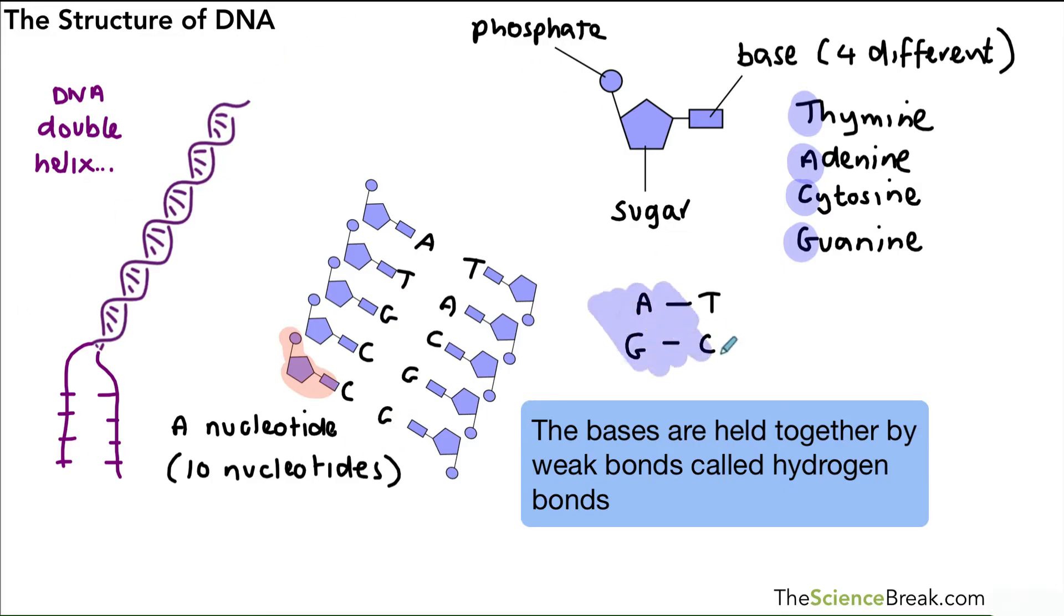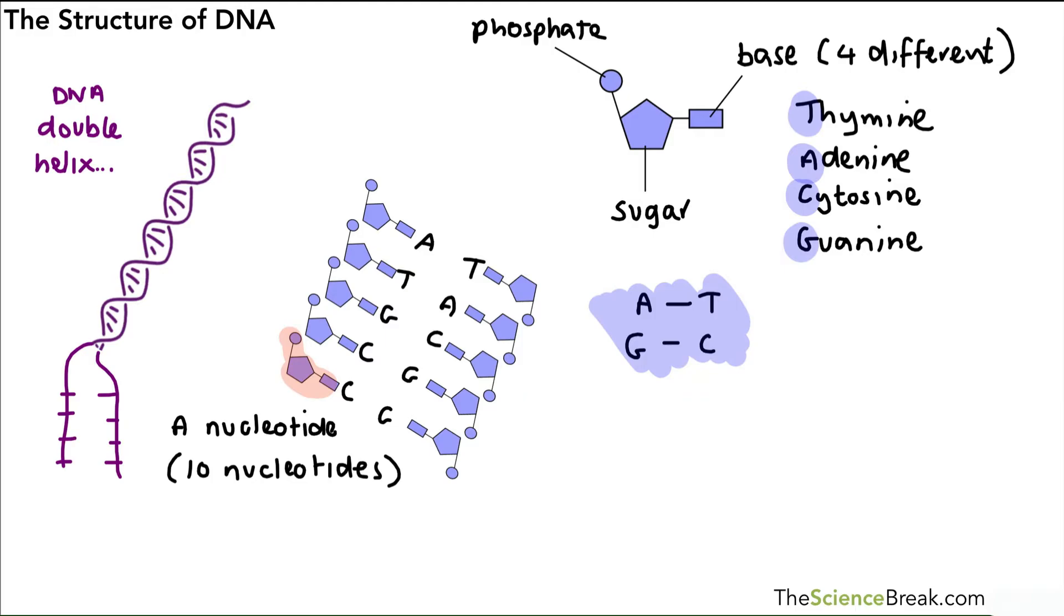So the rule is A must always pair with T, and G must always pair with C. So if you know the code on one strand, you can work out the code on the other based on that rule.